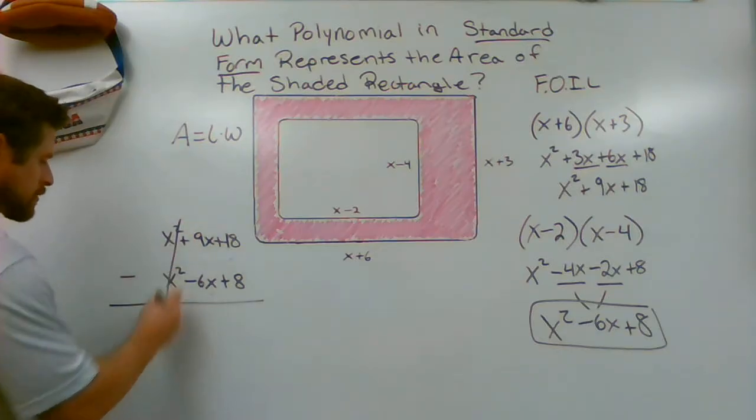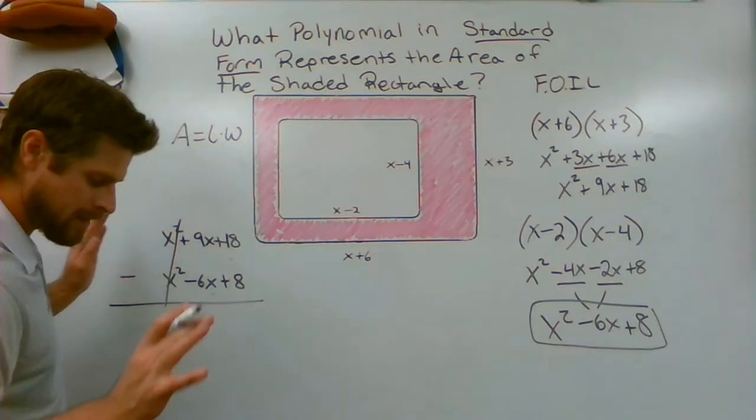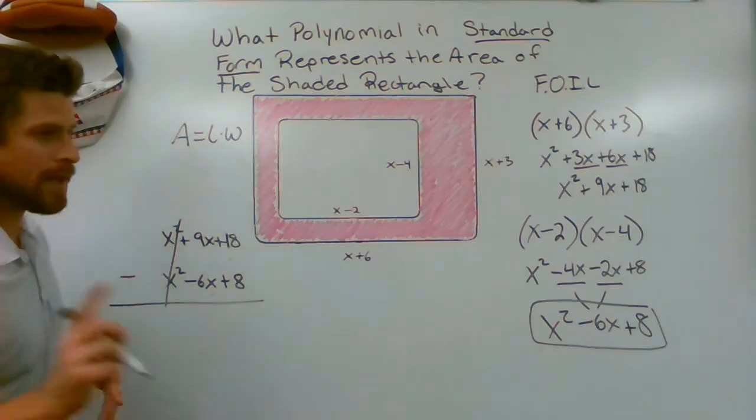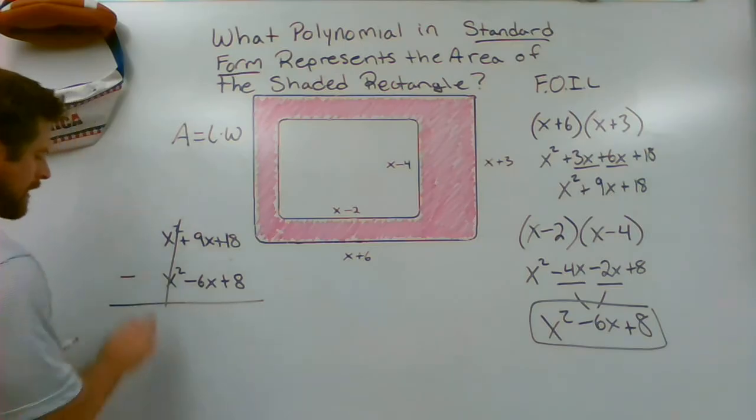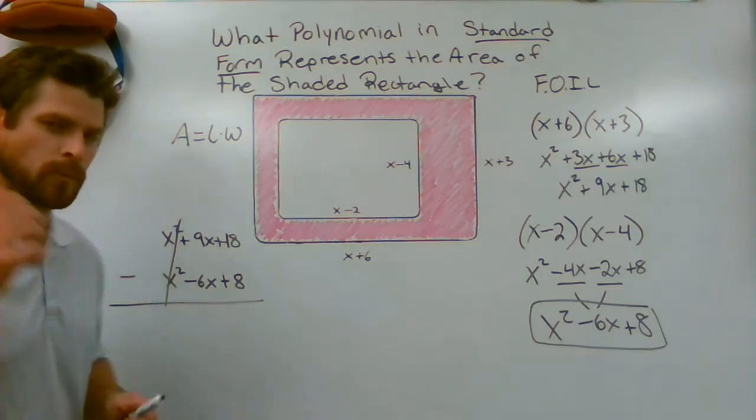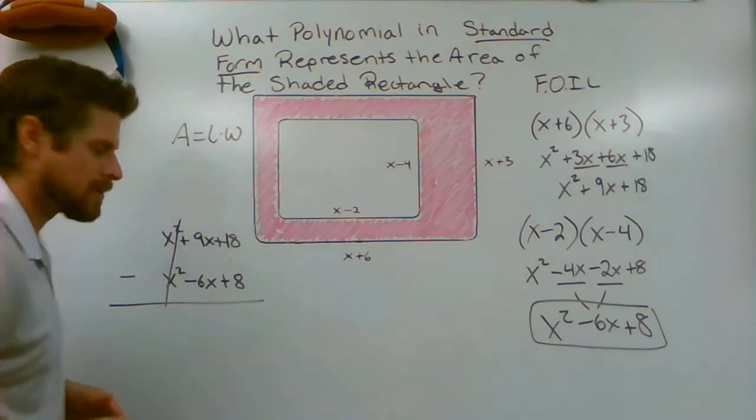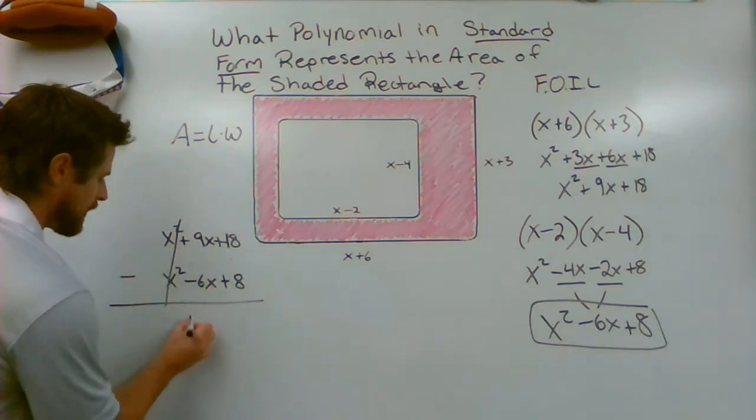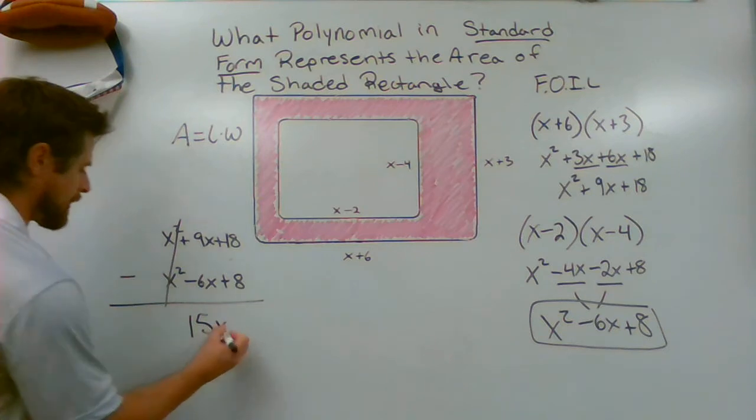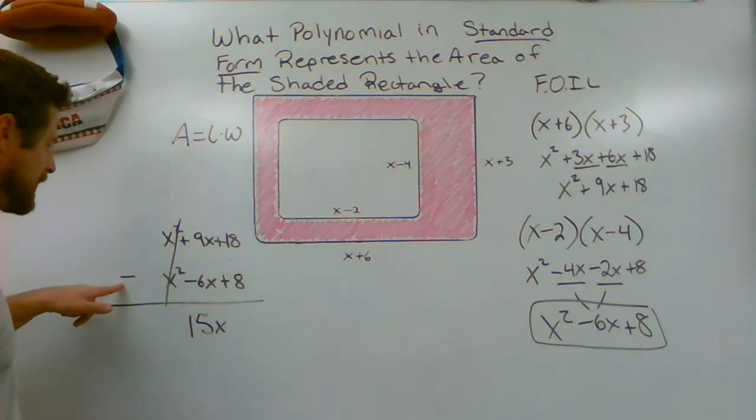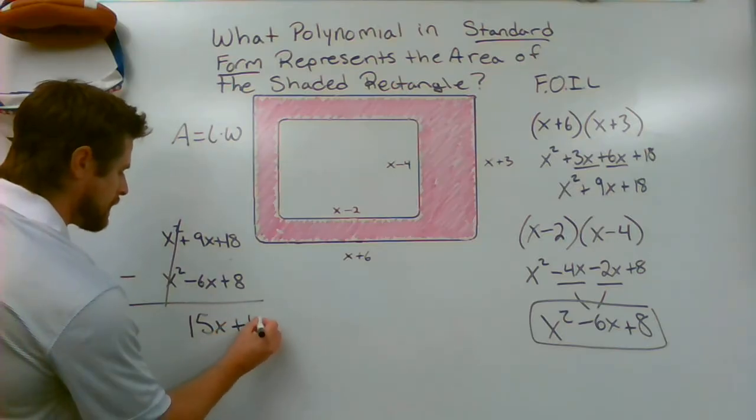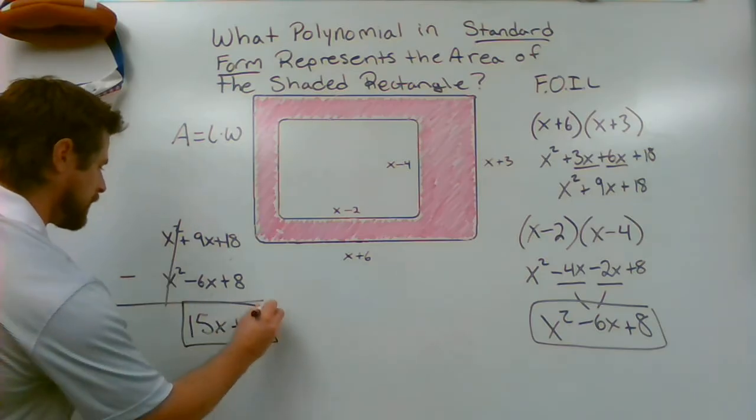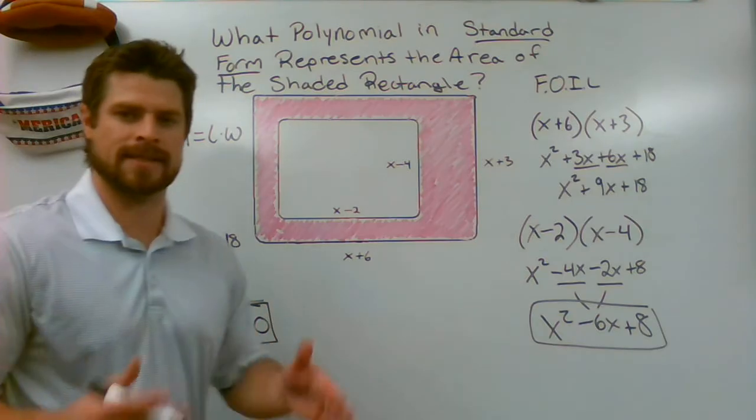X squared minus X squared, those are going to cancel. Gone. There's nothing left to write down. Now this is where I see mistakes happen from students, so pay close attention. 9X minus negative 6X. I'm subtracting a negative. What am I really doing when I'm subtracting a negative? I'm adding. So 9X plus 6X is going to end up giving me a 15X. And then 18 minus 8, that is going to subtract to make a positive 10. So my final result is 15X plus 10.